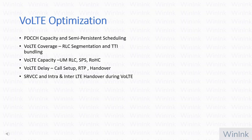Let's look at the topics we will discuss for Voice over LTE optimization. First is PDCCH capacity and how we use semi-persistent scheduling to cover that congestion. Second is VoLTE coverage, using techniques like RLC segmentation and TTI bundling. Third is VoLTE capacity using unacknowledged mode RLC, SPS, and robust header compression. Then we have VoLTE delay — including call setup delay, RTP delay, and handover delay. Finally, we have SRVCC (single radio voice call continuity) and intra-LTE handovers during VoLTE and how to control them.